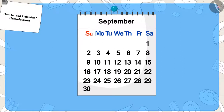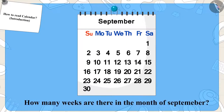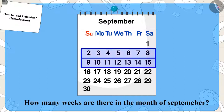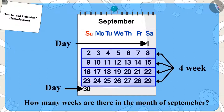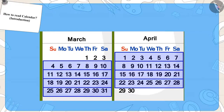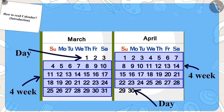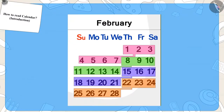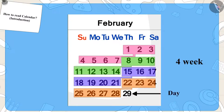Children, can you tell how many weeks are there in the month of September? There are four weeks and a few days. If you look closely, you will find that there are four weeks and a few days in every month. There are exactly four weeks only in the month of February, and in certain years it is four weeks and one day.